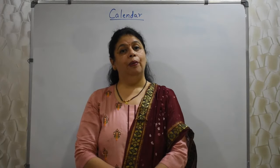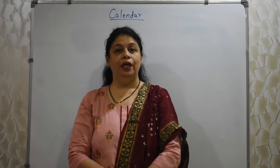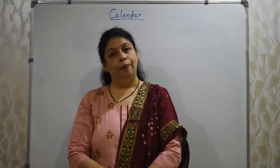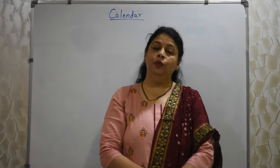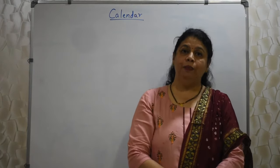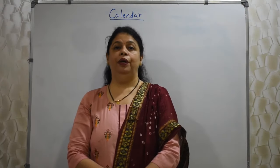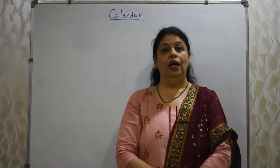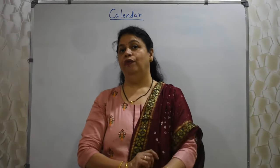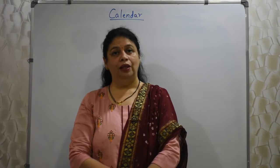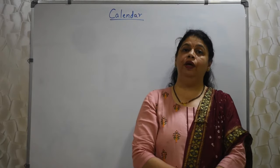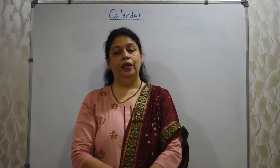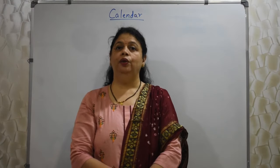Whenever a month has 31 days, the days appearing on 1st, 2nd and 3rd of that month occur 5 times. For a month with 30 days, the days on 1st and 2nd occur 5 times. In leap year February (29 days), the day on 1st February occurs 5 times. In a non-leap year February (28 days), no day is repeated 5 times. This is a very important rule of calendar.